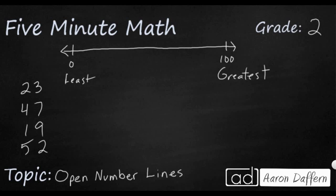What I can do is put a little halfway tick mark here and put a 50. Now I've taken my open number line and it makes a little bit more sense because I've got a few different reference points. And so I need to think about how I can place these numbers, making sure that I put them close to where they're supposed to be.